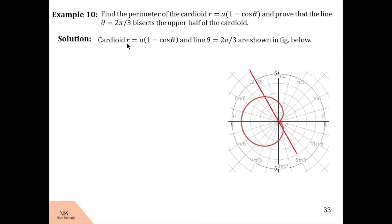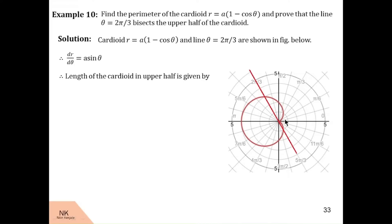Now let us first find out dr by d theta. So dr by d theta is a into 0 minus minus sin theta, that is a sin theta. Now to find perimeter of this cardioid, it is enough to find the perimeter in the upper half because it is symmetric about x axis. So length of the cardioid in upper half is given by s is equal to integral of under root r square plus dr by d theta square d theta over the limit 0 to pi.